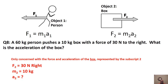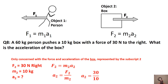You can use F, m, and a without subscripts as long as you're clear which object you're talking about — write 'box' above each value if helpful. Plugging in the values just for the box, this box accelerates at 3 meters per second squared to the right. This is Newton's second law, looking at all forces on the box, not the interaction between the person and the box.